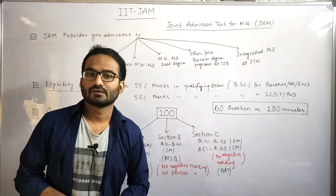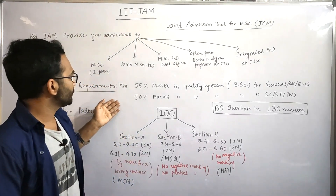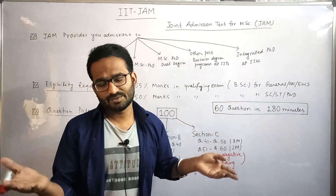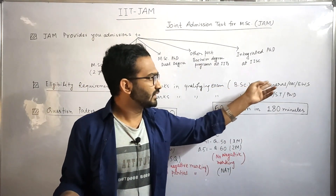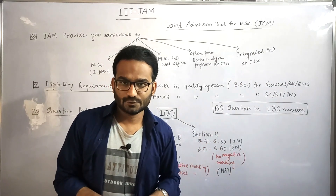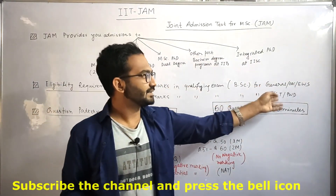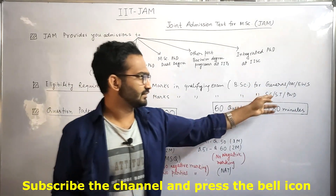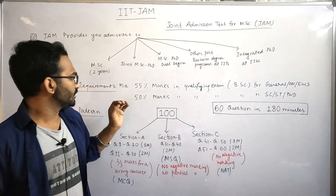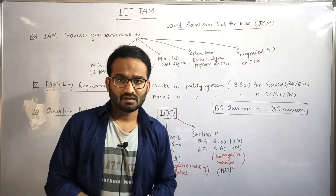Now, what are the eligibility requirements for appearing in this examination? First of all, you need 55% marks in the qualifying exam — that means at BSc level — for General, OBC, and EWS category students. Those from SC, ST, and PwD (Person with Disability) category need only 50% marks in their qualifying BSc exam.